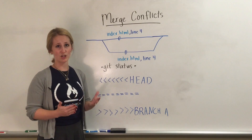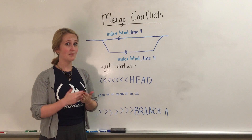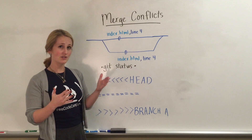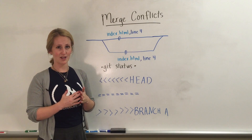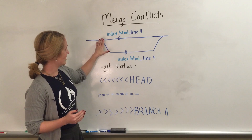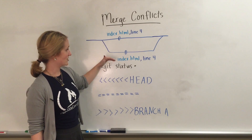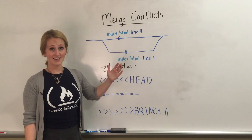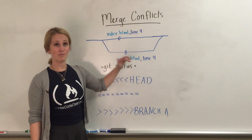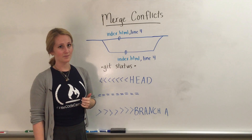A merge conflict occurs when there's been a change in the same file in the same line on the two branches you're trying to merge together. So here, for example, if we're working in index.html on two branches, and there have been changes in line four in both files, that will generate a merge conflict.